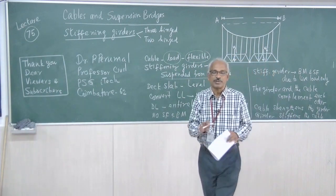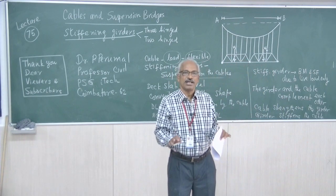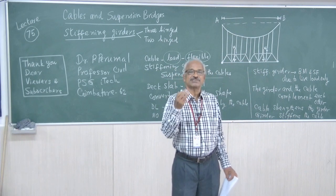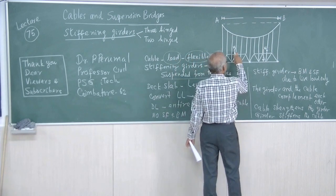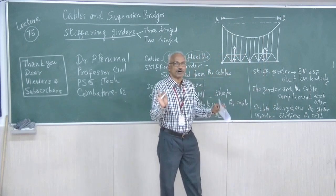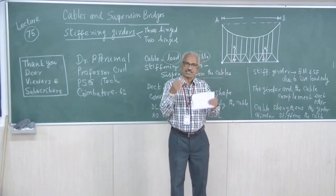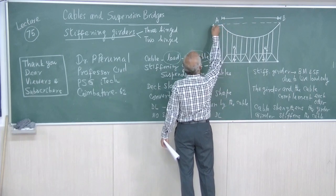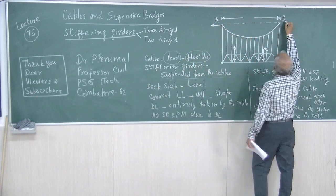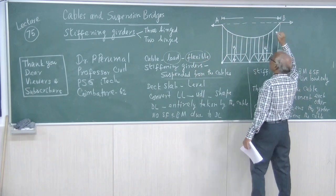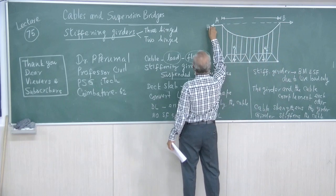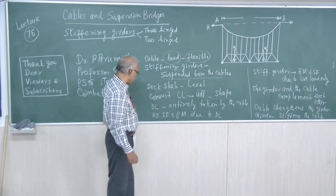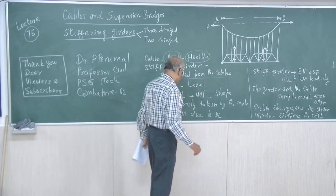Dead load will not cause bending moment or shear force in the stiffening girder. Only live load will cause bending moment and shear force in the girder. The two point loads will cause UDL in the cable, and that UDL in turn will cause a horizontal thrust and a vertical reaction — all these things are only due to W1 and W2. So the parabolic shape of the cable will be maintained, dead load will be entirely taken by the cable, and shear force and bending moment only occur due to live load.